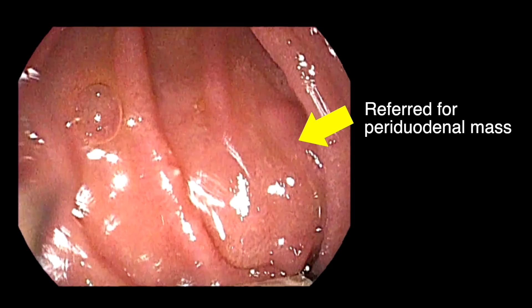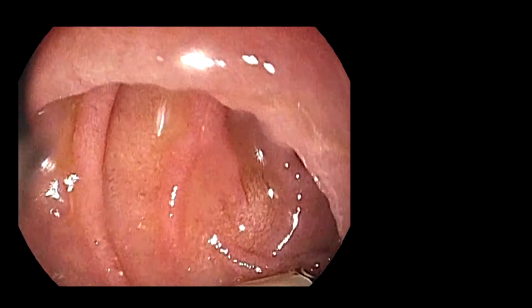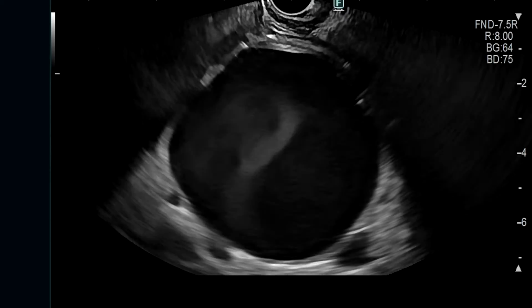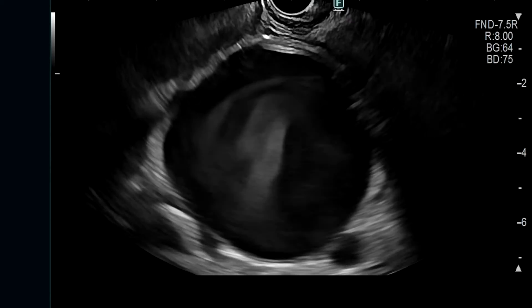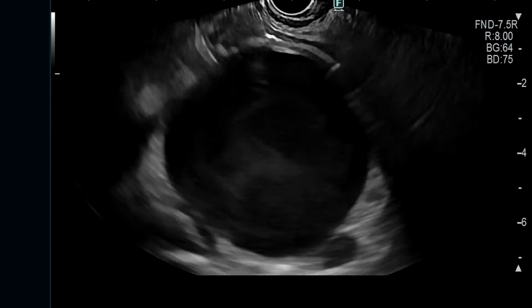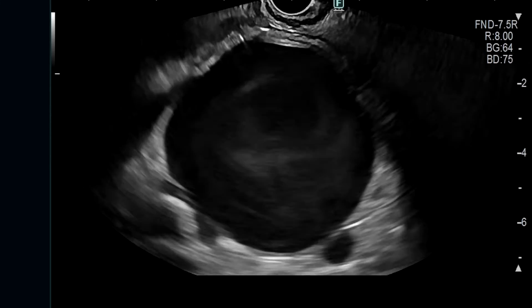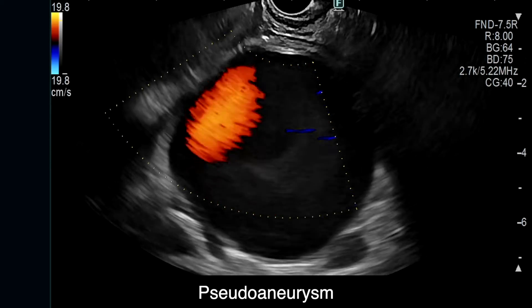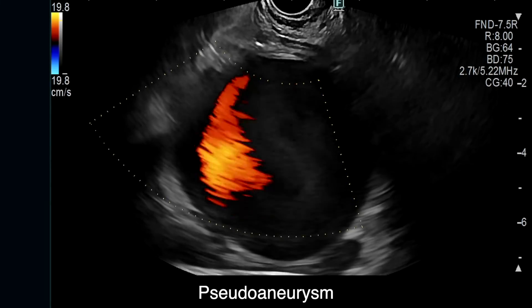This 56-year-old patient was referred for evaluation of a periodontal mass. On EUS examination, the lesion was found to be a vascular lesion with flow consistent with an aortic pseudoaneurysm.